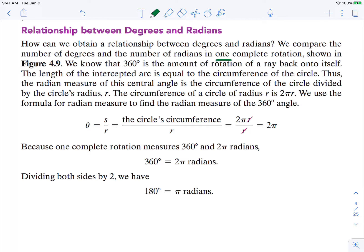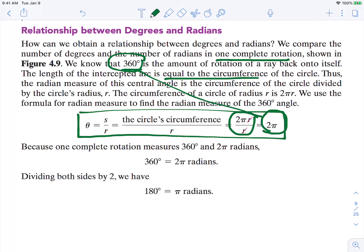One rotation around the coordinate plane is 360 degrees. The length of an intercepted arc is equal to the circumference of the circle. Thus, the radian measure of a central angle is a circumference of a circle divided by the radius. So we've worked with this formula already, but now we're inputting 2πr divided by 2π. So one measurement around the central angle, these two are considered equivalent.